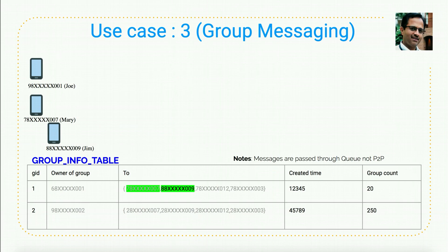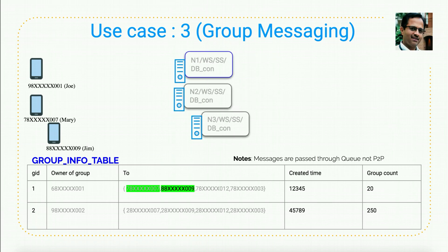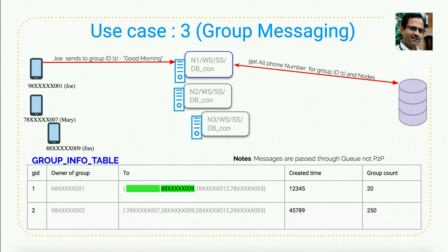For group messaging, we need a group info table with group ID, owner of the group, a list of users, creation time, and group count — the group count ensures the number of users doesn't exceed a limit. Let's say Joe wants to send a group message. Joe, Mary, and Jim are connected to node 1, node 2, and node 3 based on their pre-configurations. Joe sends a 'Good morning' message to group ID 1. His client already has the group ID information, so he goes into the group and sends the message.